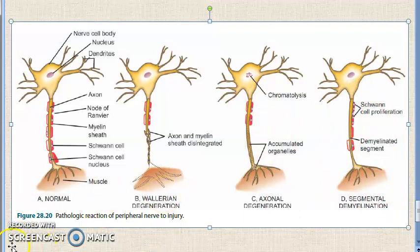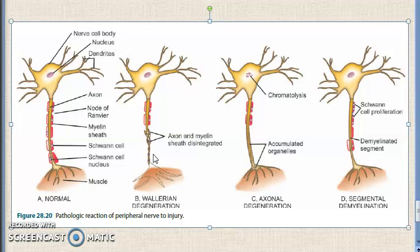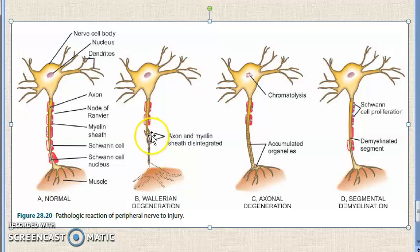In Wallerian degeneration, there is accumulation of organelles in the proximal and distal ends wherever there is a transection. Then the axon and the myelin sheath distal to the transection site undergo disintegration up to the node of Ranvier. So degeneration occurs distal to the transection up to the next node of Ranvier, followed by phagocytosis.